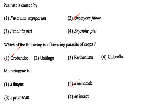Next one: P rust is caused by option 1, Fusarium oxysporum; option 2, Uromyces fabae; option 3, Paxenia species; option 4, Erysiphe species. Answer is option 2: Uromyces fabae.